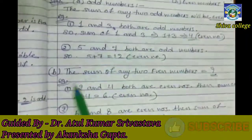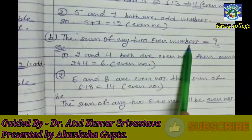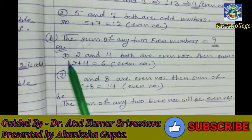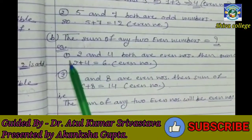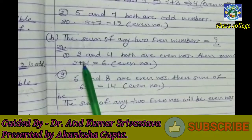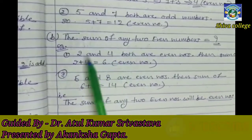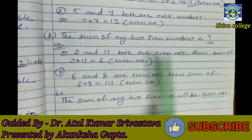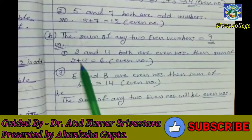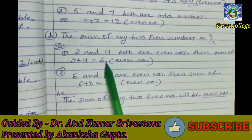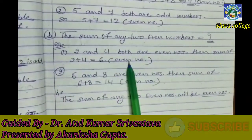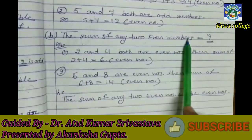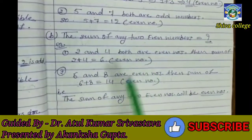Part B: Sum of any two even numbers. Let's see the example. First, 2 is an even number and 4 is also an even number — both are even numbers. Sum of 2 plus 4 equals 6. 6 is also an even number. So the sum of any two even numbers will be even numbers.